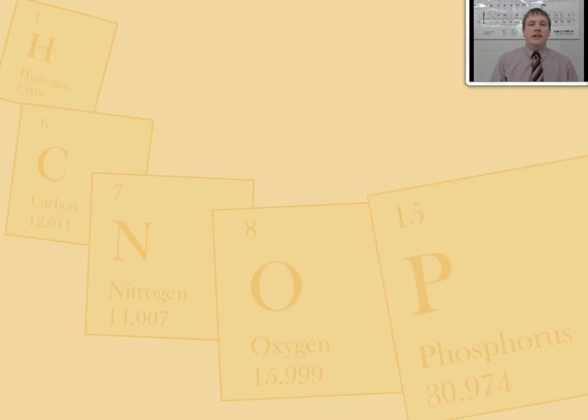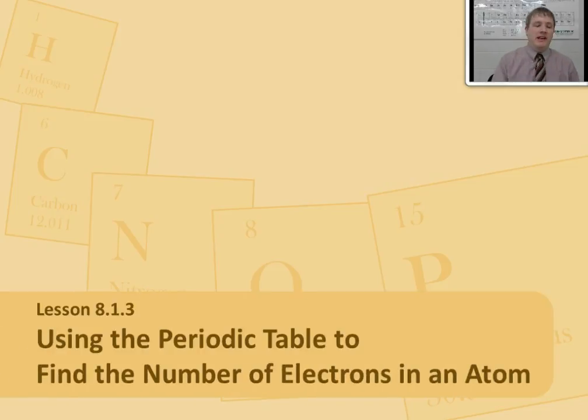In this lesson, we're going to take a look at something that's just slightly more complex than what we learned in the previous lesson: how to use the periodic table to find the number of electrons. You're going to find that this is also extremely easy, just like finding the number of protons.